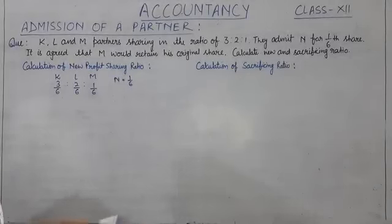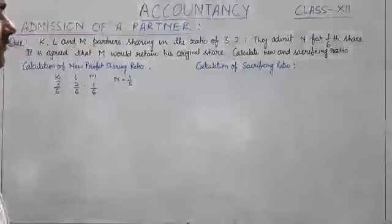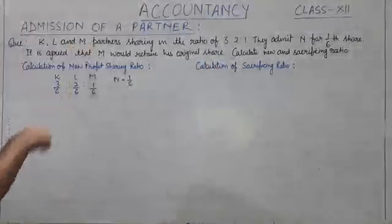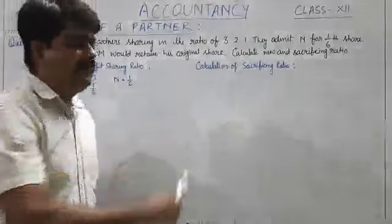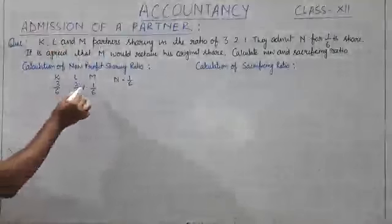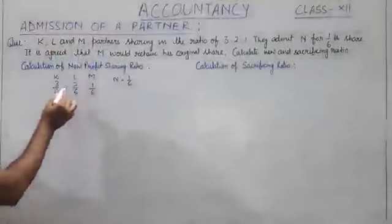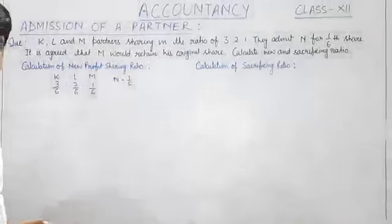See one more question, my dear students. K, L, and M are partners sharing in the ratio of 3:2:1. They admit N for 1/6 share. It is agreed that M would retain his original share. We have to calculate the new and sacrificing ratio. So you can see profit sharing ratio of K, L, and M is 3:2:1, that means 3/6, 2/6, and 1/6. N is admitted for 1/6 share.